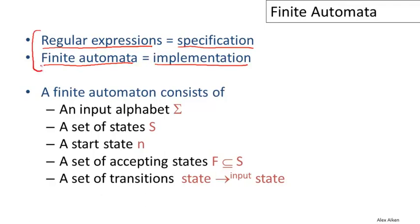Regular expressions and finite automata are very closely related. It turns out that they can specify exactly the same languages, called the regular languages. We won't prove that in this course, but we'll certainly make use of that fact. So what is a finite automaton? Here is a typical definition as you might see it in an automata theory textbook. A finite automaton consists of an input alphabet — the set of characters it can read — and a finite set of states. This is what makes it a finite automaton: it has some set of states it can be in. One of those states is special and is designated as the start state.